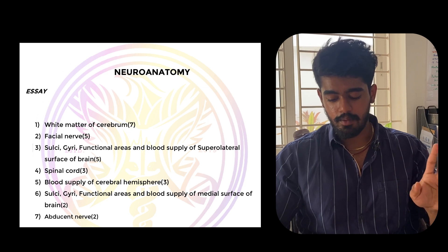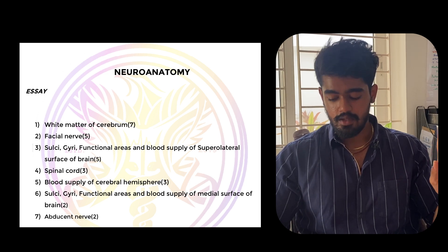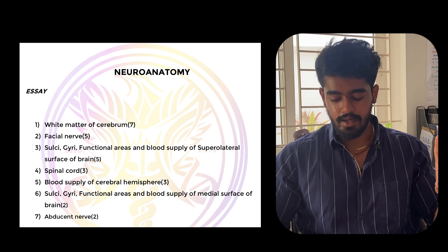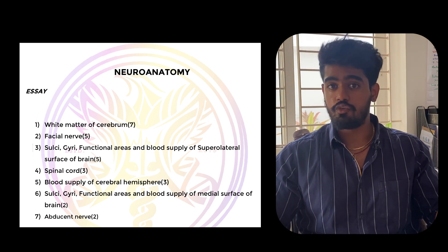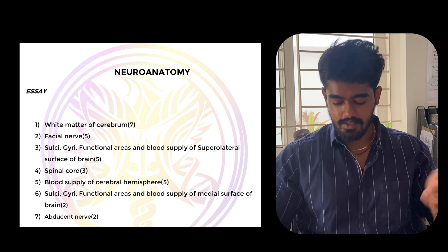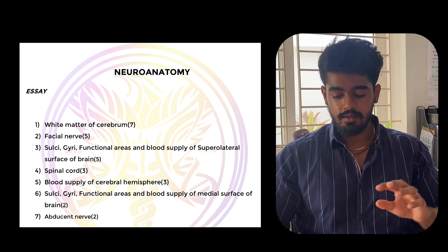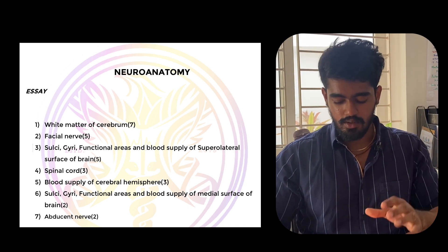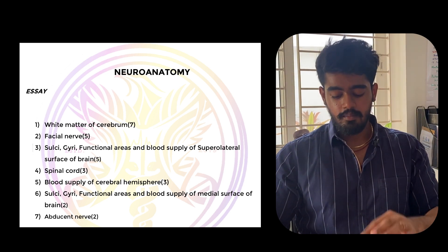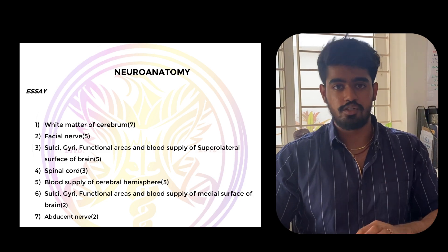For neuroanatomy, the important topics are: cerebrum, facial nerve, superolateral surface of brain, spinal cord, and blood supply of brain. Also study the cranial nerves — just have a basic idea about all of them, because they may come in the short notes.